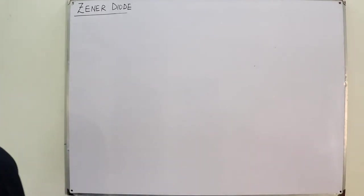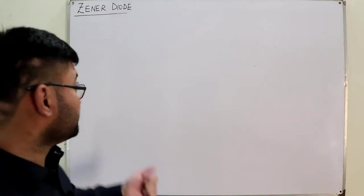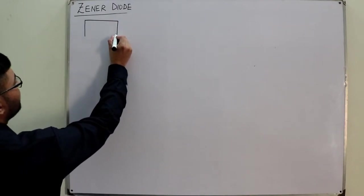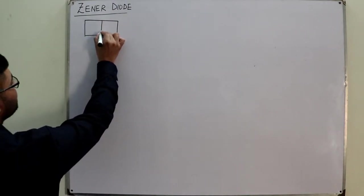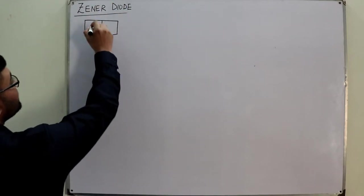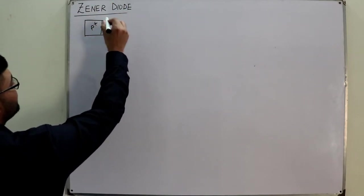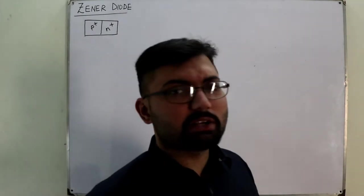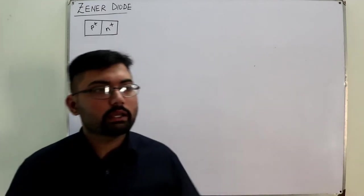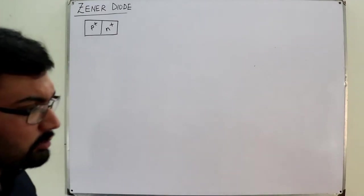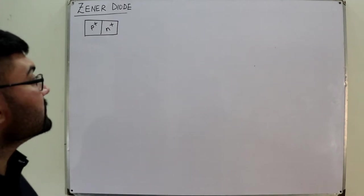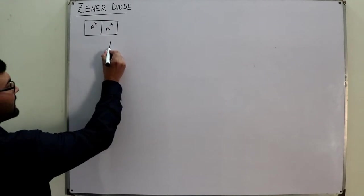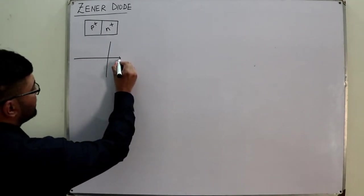So what did we see about the Zener diode? It is a heavily doped diode. On the junction side you have P-plus and similarly N-plus, representing the heavy doping. In a normal diode the P side is highly doped compared to the N side, but here both sides are heavily doped.